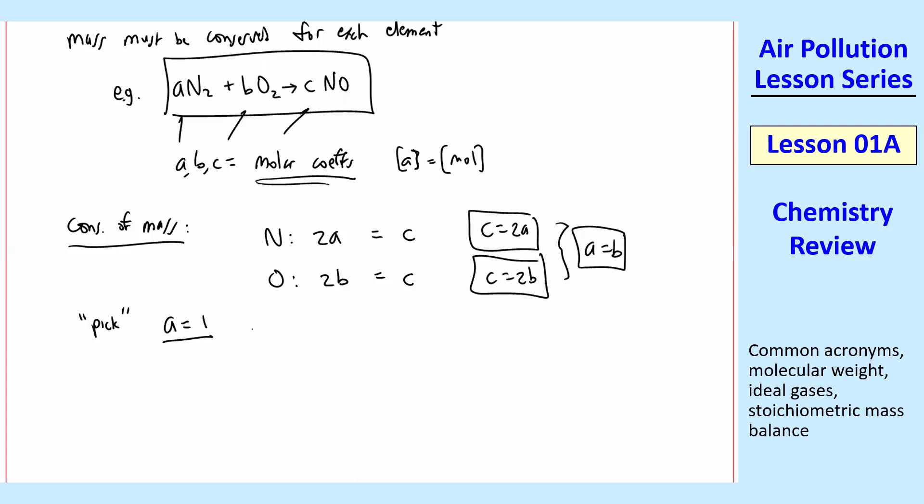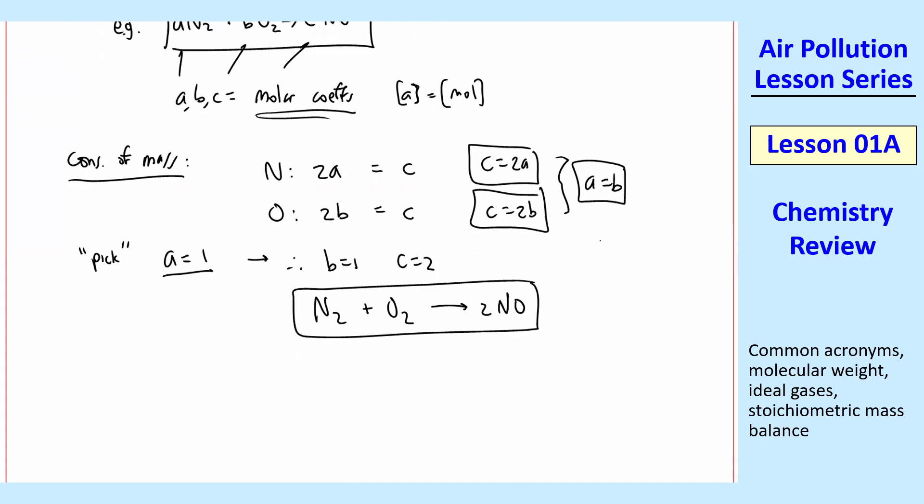And therefore, from these two equations, B is equal to A. So B equal 1 and C is equal to 2A. So C equal 2. So then we would write A equal 1 N2 plus B equal 1 O2 yields C equal 2. So 2 NO.